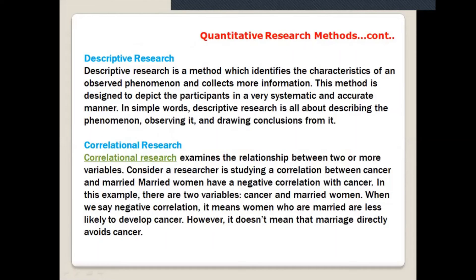Another method is descriptive research. Descriptive research is a method that identifies the characteristics of an observed phenomenon and collects more information. This method is designed to depict participants in a very systematic and accurate manner. In simple words, descriptive research is all about describing phenomena - something that has happened - you are observing it and drawing a conclusion from it.